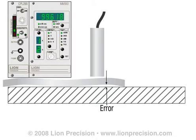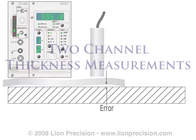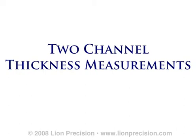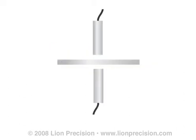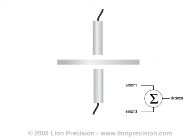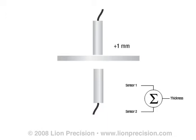This error can be avoided by using a two-channel method. Two-channel thickness measurements place the part to be measured between two sensors. The sum of the measurements from the two sensors provides the final measurement of thickness. If the part moves one millimeter toward the top sensor, its output will change by plus one, but it also moves one millimeter away from the bottom sensor causing a change of minus one. The sum of the two sensors remains unchanged, which eliminates the errors from single-channel problems with deformity and contact with the reference surface.